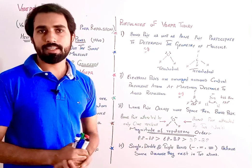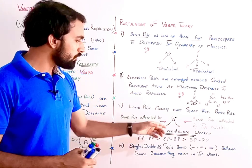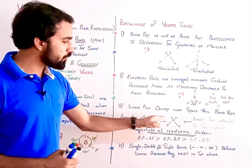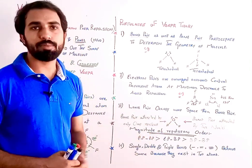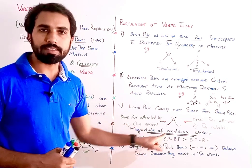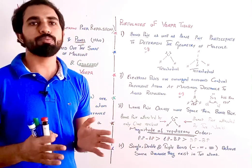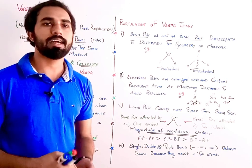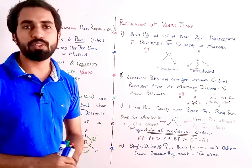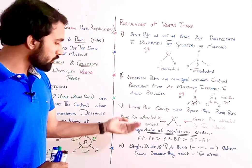अब इसके magnitude of repulsion की अगर हम बात करें — water molecule में lone pair भी मौजूद है और bond pair भी। Repulsion की बात करें — चूँकि जो lone pair है वो ज्यादा repulsion रखता है, इसलिए lone pair की lone pair के लिए repulsion जो होगी वो सबसे ज्यादा होगी۔ دوسرے نمبر پر lone pair کی bond pair کے لیے جو repulsion ہوگی وہ اس سے کم ہوگی۔ اور جو bond pair کی bond pair کو repulsion ہے وہ سب سے کم ہوگی۔ یہ magnitude of repulsion کا order ہے: lp-lp > lp-bp > bp-bp — اور یہ بہت اہم ہے، اور یہ MCQs mostly paper میں آ جاتا ہے۔